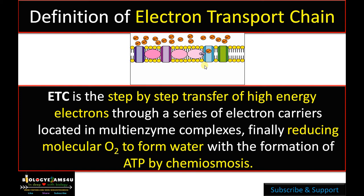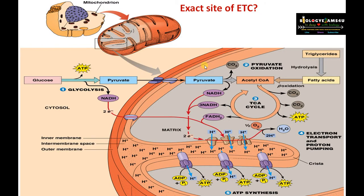We have given a detailed video on the first two phases of cellular respiration — glycolysis and Krebs cycle — you can refer to that as background information. Now let's move into the detail. The exact site of electron transport chain is very important to understand, and I often ask my students to imagine mitochondria as a big room with different compartments.